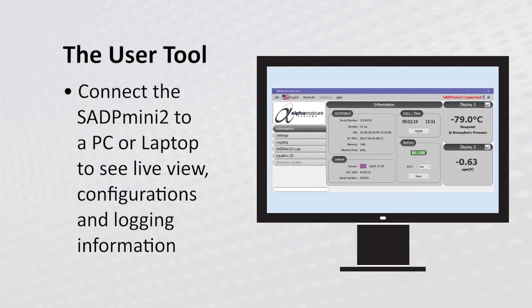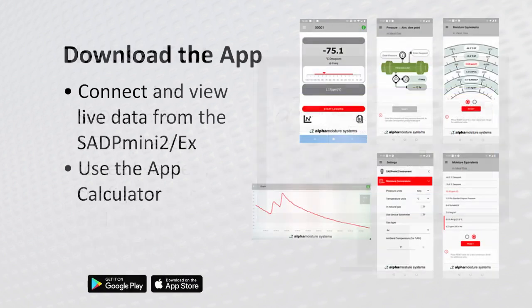The user tool connects the SADP Mini 2 to a PC or laptop to see a live view, configurations and logging information. Download the app, connect and view live data from the SADP Mini 2 and SADP Mini 2EX. Use the app calculator.